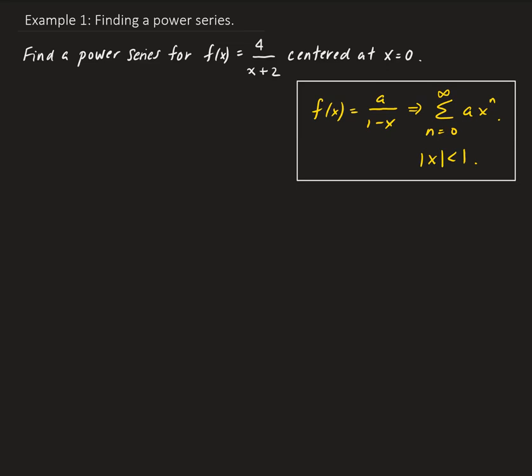In this example, we want to find a power series for the function given here, centered at the origin. So in this box that you see over here to the right, this is the function we have. We have a over 1 minus x. This function can be represented by what's called a geometric power series, and this series is based on the geometric series. We have to look at the function we're given and try to write it in terms of the function given in the box.